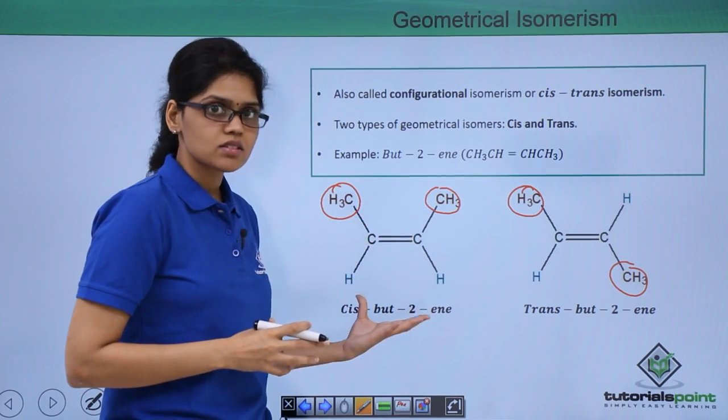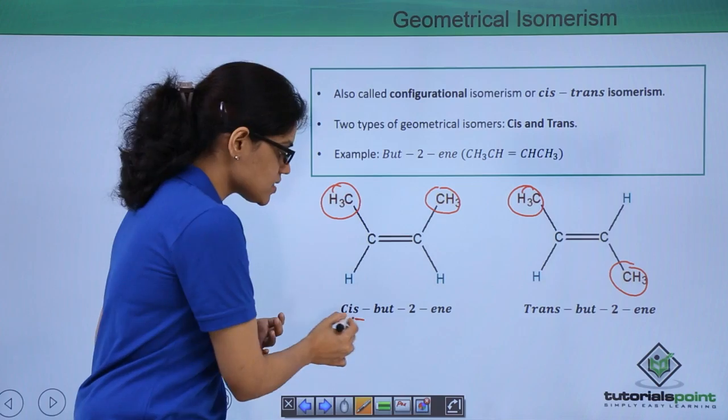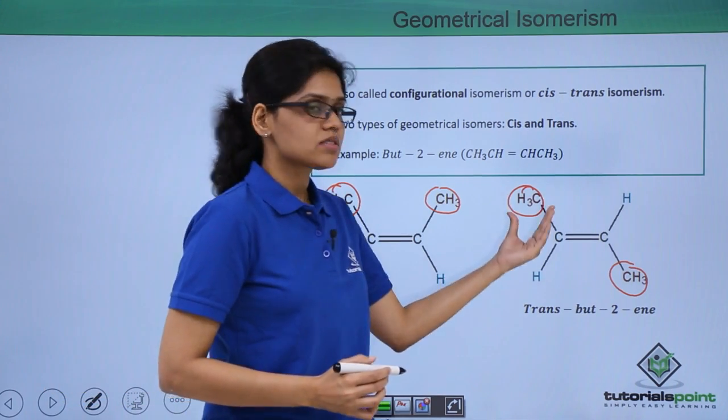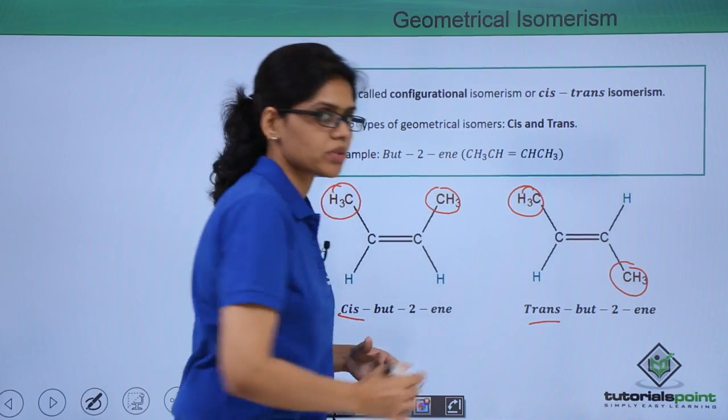The structure in which the groups are on the same side of the double bond are called cis isomers and the structure where they are opposite to each other are called trans isomer.